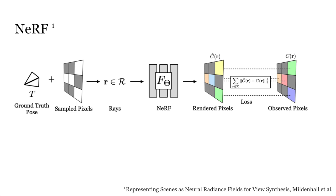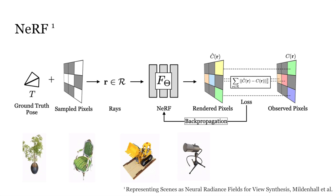The rendered pixels are compared with the given images to compute the loss, and the gradients of the loss are back-propagated to update the neural network. After training, NeRF is able to synthesize consistent novel views, as shown in the video here.